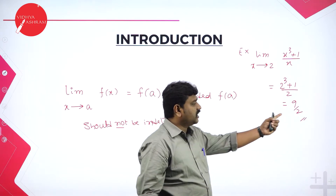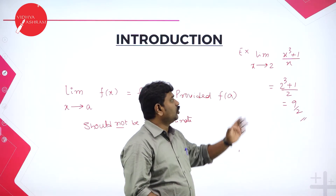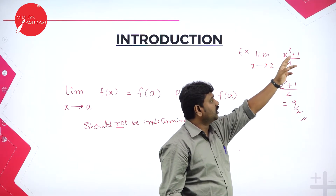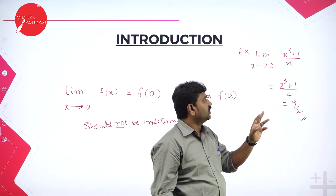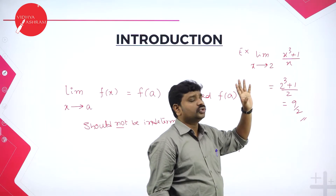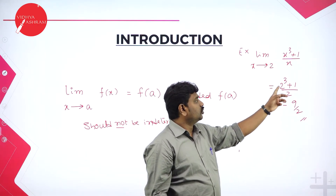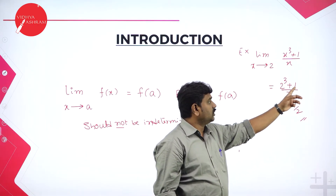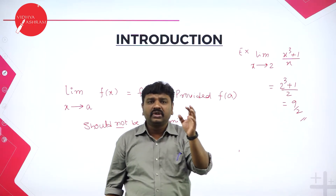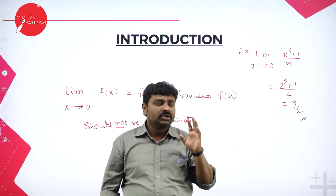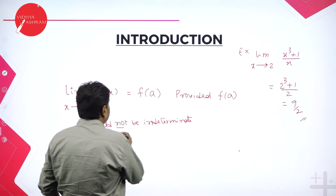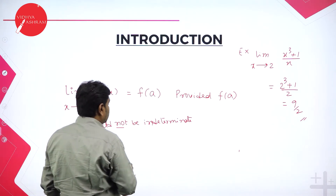Whenever you apply limit, you should finally get a unique limit value. Limit x tends to 2, x cube plus 1 by x. What is meant by x tends to 2? In the place of x, put 2. If I do that, 2 cube plus 1 divided by 2 gives you 9 by 2. Means I am getting a unique value. Therefore limit exists. Provided f of a should not be indeterminate.